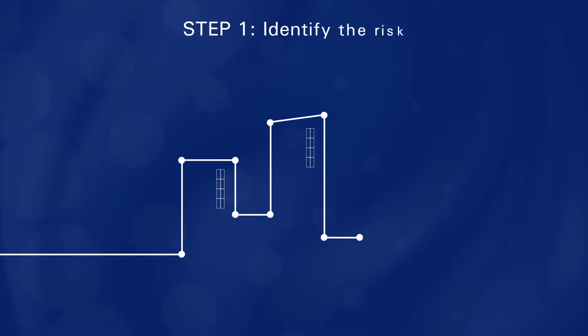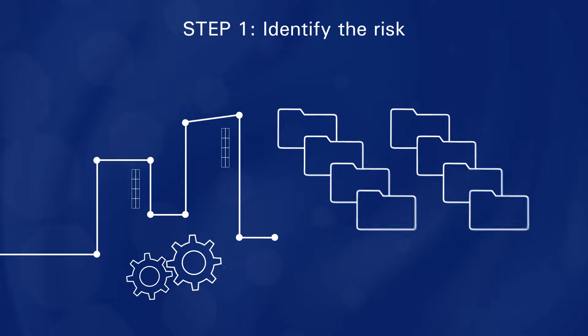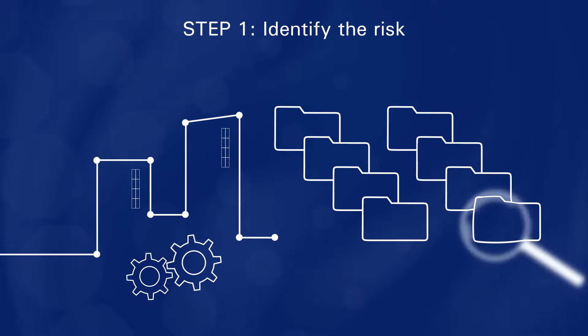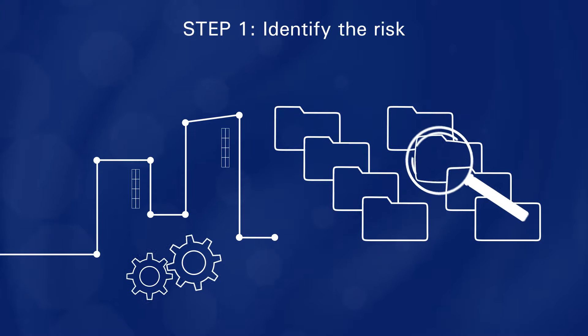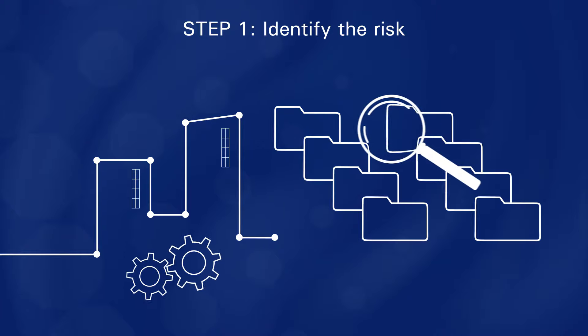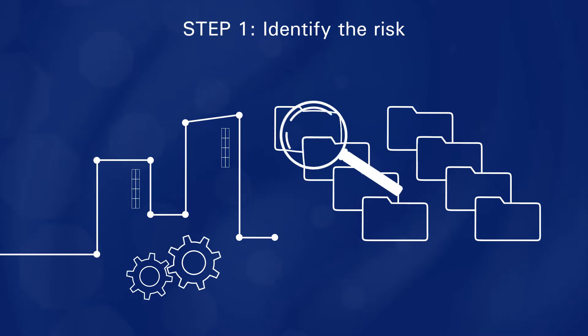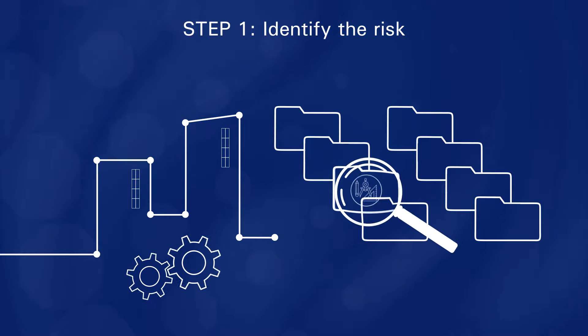Step one, identify the risk. Start by classifying your information assets. Which ones are critical to the operation of your business? For example, the latest product designs would probably be of crucial importance to an innovation manager.